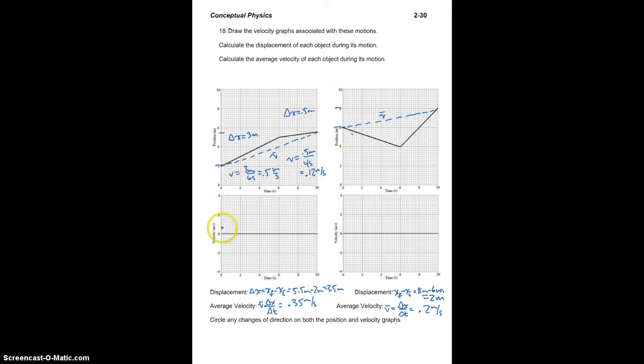We're talking about going from half a meter per second to 0.125 meters per second. We don't have any direction changes here because this always stays positive.